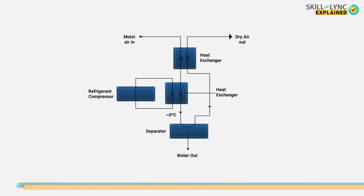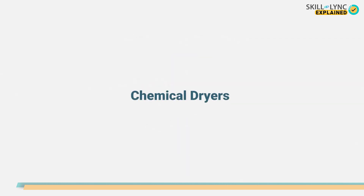To increase the efficiency of these systems, the cool air leaving the system can be used in a heat exchanger to cool the incoming air. Thus, the pre-cooled air condenses more easily, increasing the overall efficiency. But some systems require absolutely dry air, which can be obtained by using chemical dryers.